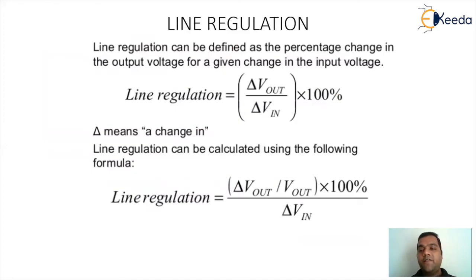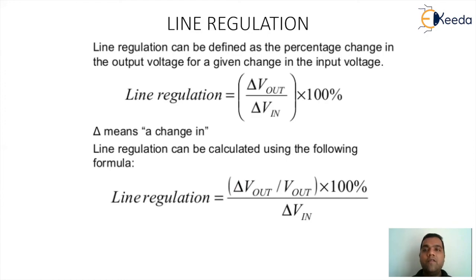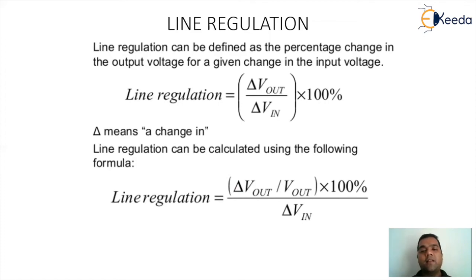The next parameter is line regulation. Whatever supply comes to our house travels from a power line, and whenever there is a fluctuation on the power line, there is a fluctuation in the output after the energy is processed. Line regulation is defined as the percentage change in output voltage for a change in input voltage. It can be expressed as: (ΔV_out / V_out) / ΔV_in × 100. It is essentially the measurement of error in the output due to input line variations.